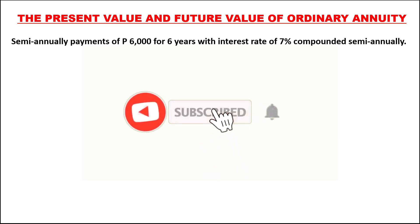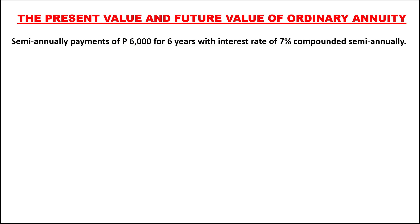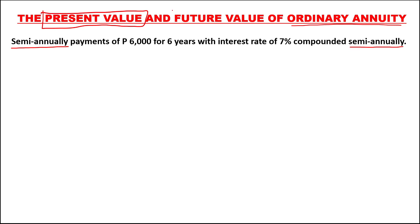Let's have this problem. Semi-annually payments of 6,000 pesos for 6 years with an interest rate of 7% compounded semi-annually. This is an example of ordinary annuity because the periodic payment is equal to the compounding period. We need to find the present value and the future value of this ordinary annuity.